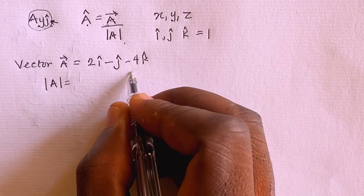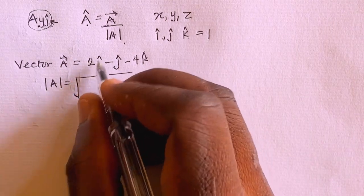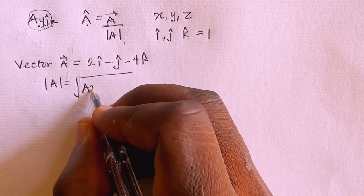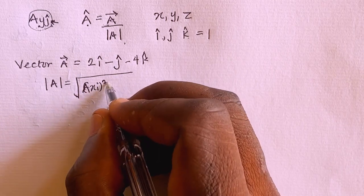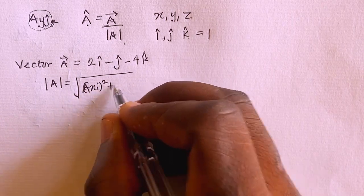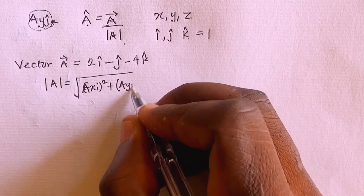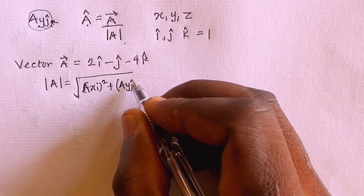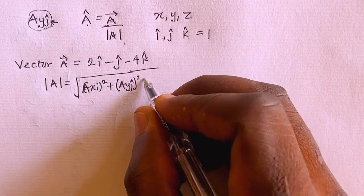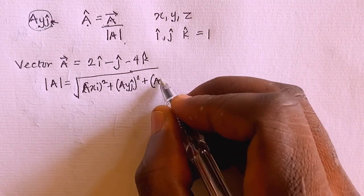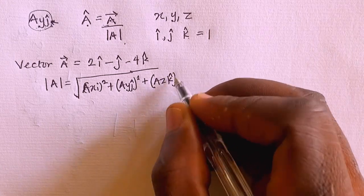If I need the magnitude of vector a, in this case that would be the square root of a_x_i squared, plus a_y_j squared, plus a_z_k squared.